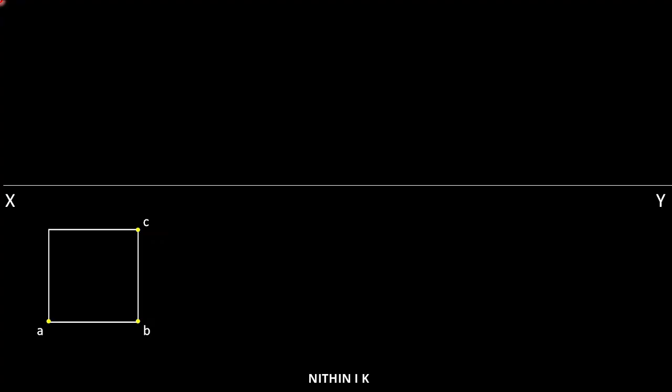The axis is labeled X-O-M, where M is the bottom point. The base will touch at point M. The side length is 45 mm and the height of the pyramid is equal to 65 mm.